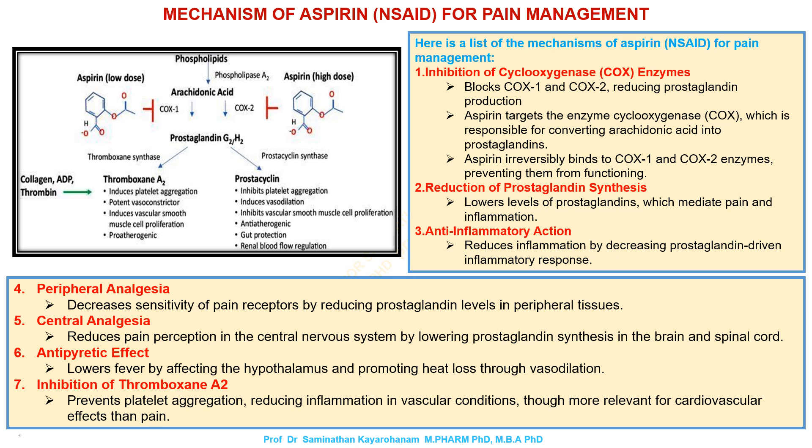4. Peripheral analgesia decreases sensitivity of pain receptors by reducing prostaglandin levels in peripheral tissues. 5. Central analgesia reduces pain perception in the central nervous system by lowering prostaglandin synthesis in the brain and spinal cord.